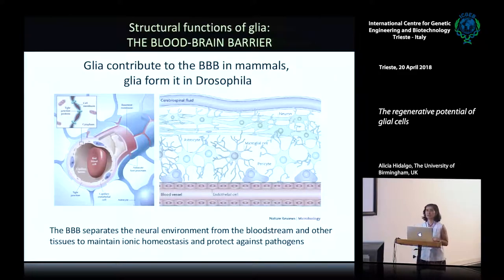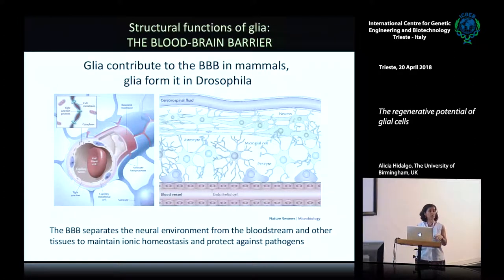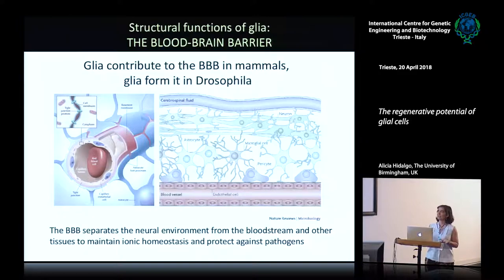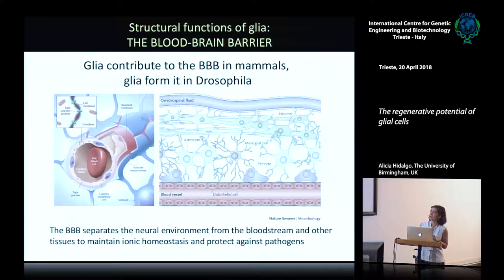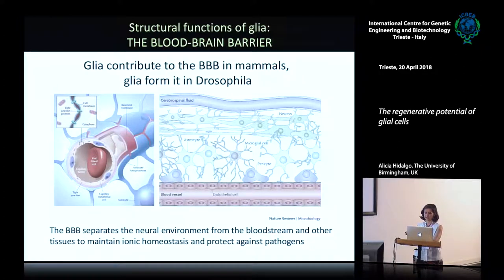Another structural function of glia is the formation of the blood-brain barrier. The blood-brain barrier is important because it separates the brain from the bloodstream and all other tissues. This is important for neuronal function to maintain the ionic homeostasis needed for proper synaptic transmission. The blood-brain barrier is formed by endothelial cells in mammals, the basement membrane, and the end-feet of astrocytes that cover it. In Drosophila, the blood-brain barrier is formed just by different types of glial cells. So this is an important structural function of glia.